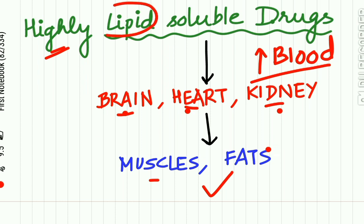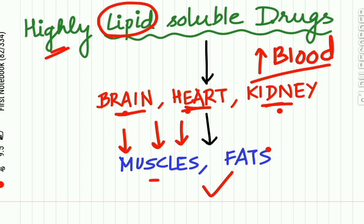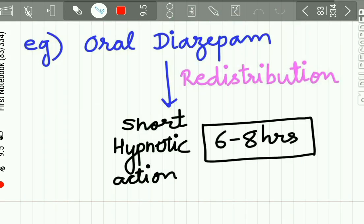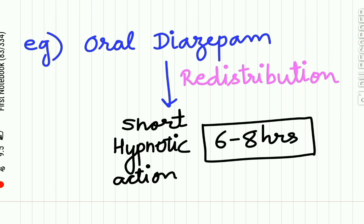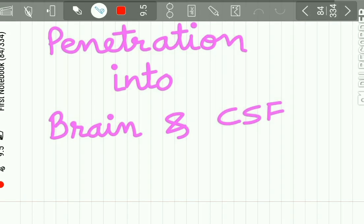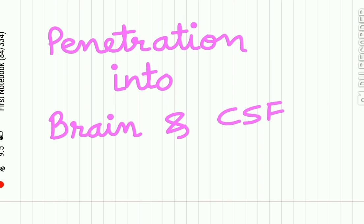The more lipid soluble the drug, the faster is the redistribution. If the drug has to exert its primary action on the brain, heart, or kidney, then due to redistribution there is termination of action of the drug, because it no longer remains in those organs but is redistributed to the muscles and fat. An example is oral diazepam, which because of redistribution shows a short hypnotic action of only six to eight hours. The next important concept is the penetration into the brain and CSF.